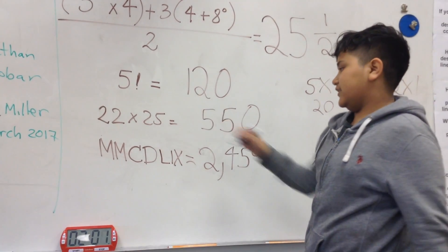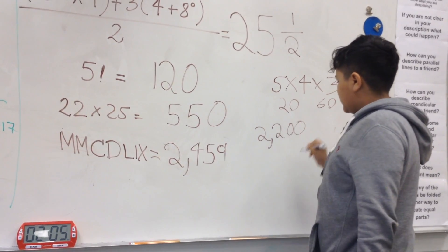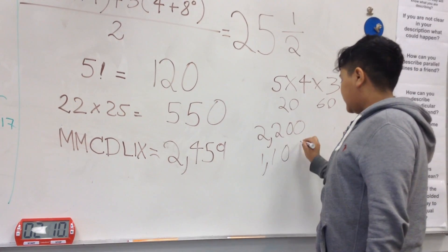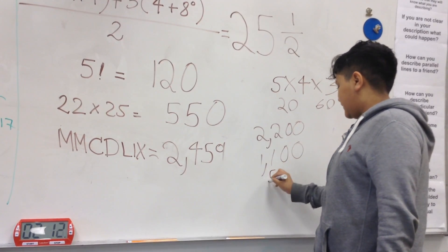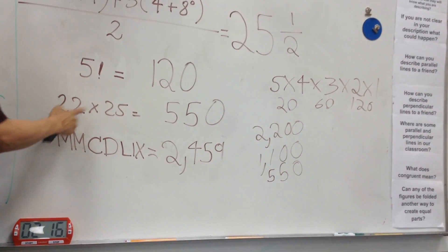What about this? Oh, that's times a hundred. It's two thousand two hundred. Divided by two is one thousand one hundred. Then divided by two again is five hundred fifty. So you first multiply times one hundred and then divide by four.